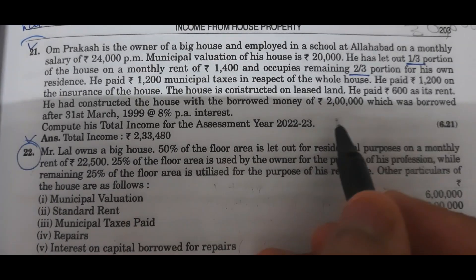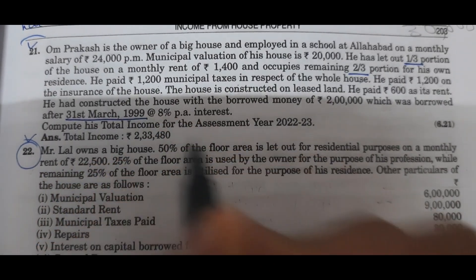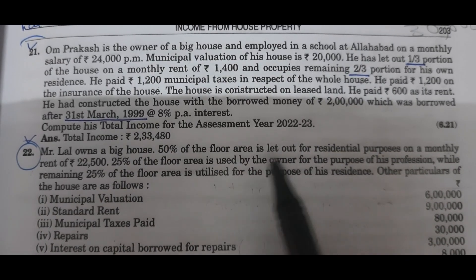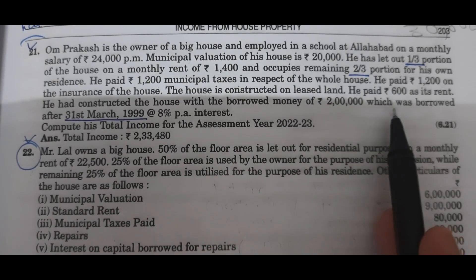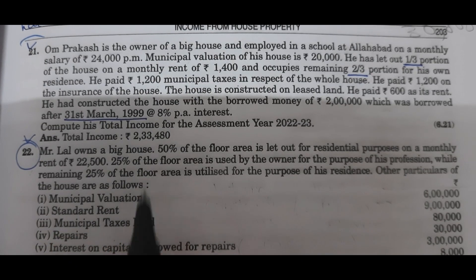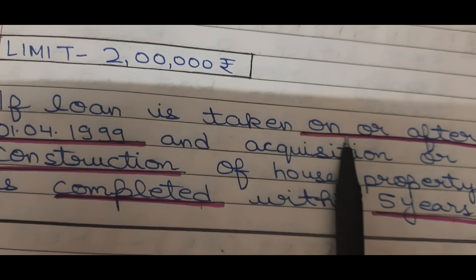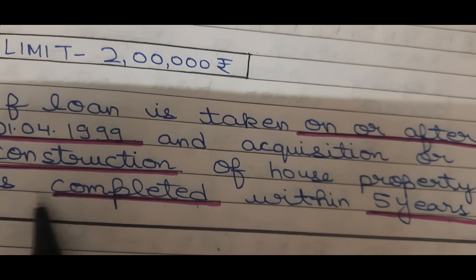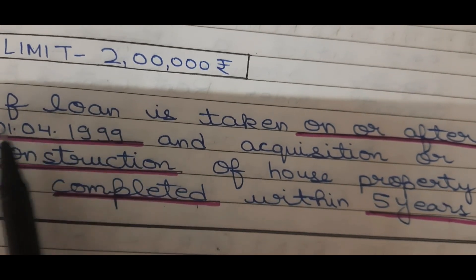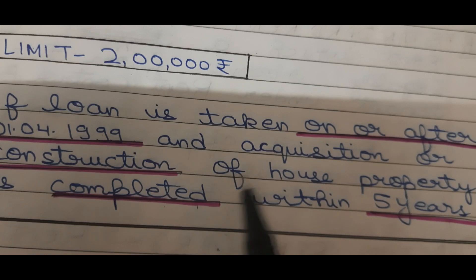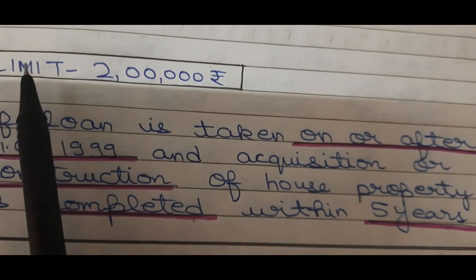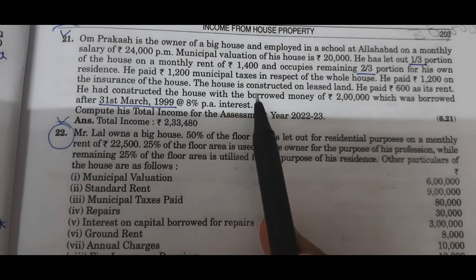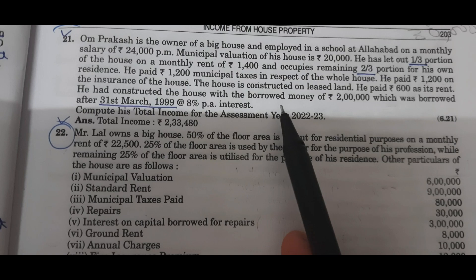Since the loan is borrowed after 31st March 1999, we will get the deduction. The date matters: if a loan is taken on or after 1st April 1999 and acquisition or construction of house property is completed within 5 years, then for self-occupied we need to keep the interest on loan up to Rs. 2,00,000 limit.